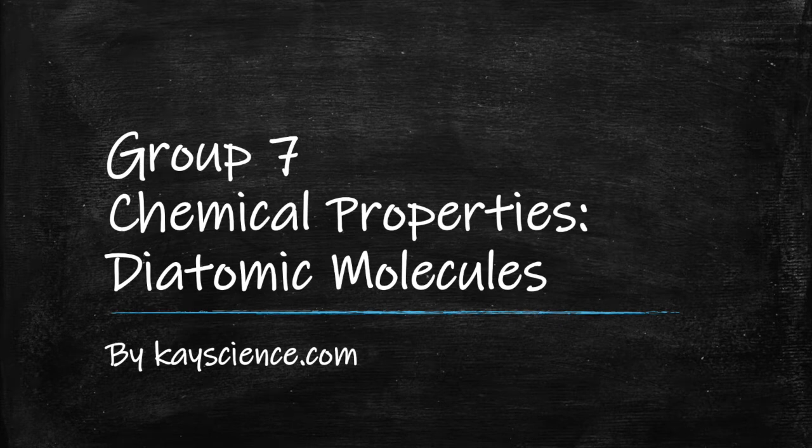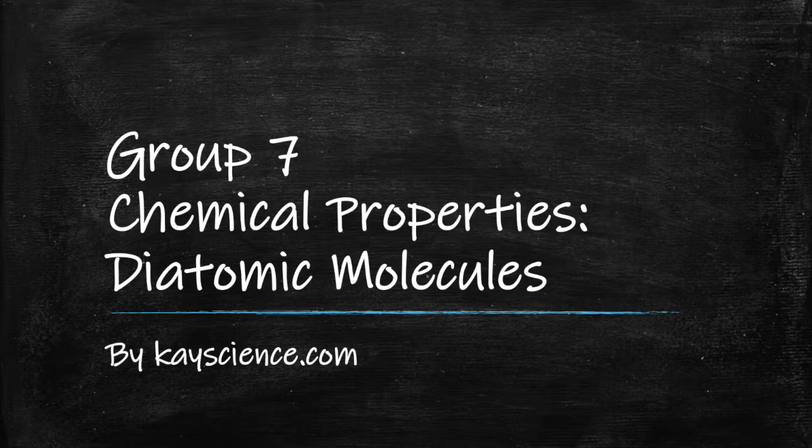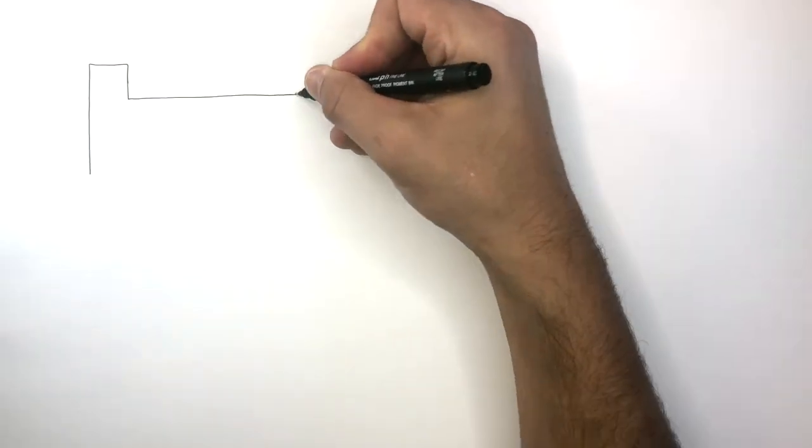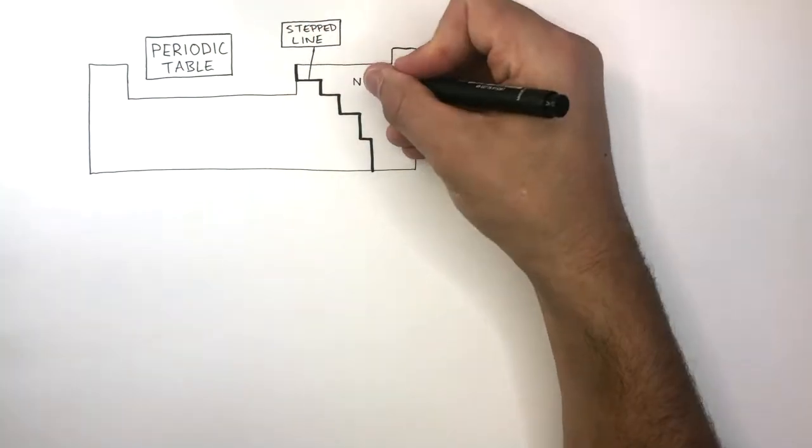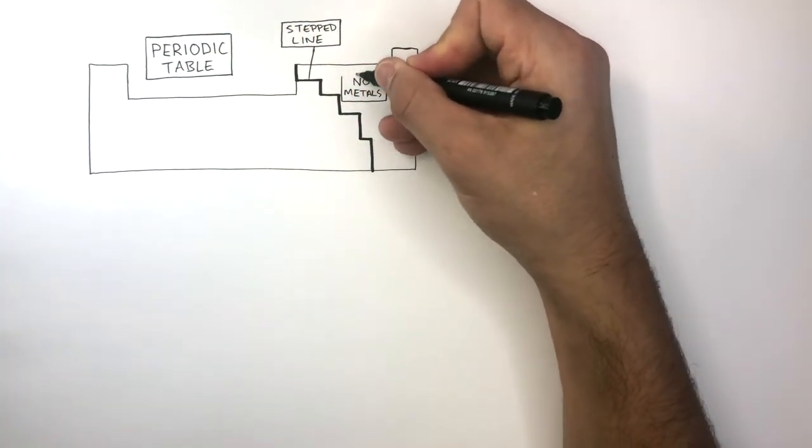Group 7 Chemical Properties by Atomic Molecules. Here I'm drawing a simplified periodic table. To the right of the stepped line are the non-metals, and to the left are the metals.